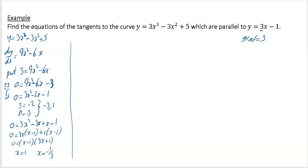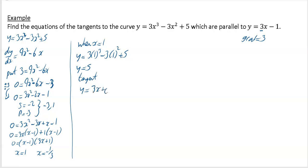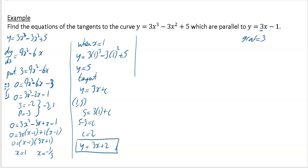This question is more difficult because we've got two tangents to find. Starting with x equals 1: my corresponding y value is 3 times 1 cubed minus 3 times 1 squared plus 5, so y equals 5. My tangent for this one is y equals 3x plus c, because the gradient was 3. Substitute in the point (1, 5): instead of y write 5, instead of x write 1. So 5 minus 3 equals c, so c equals 2. Your tangent is y equals 3x plus 2.